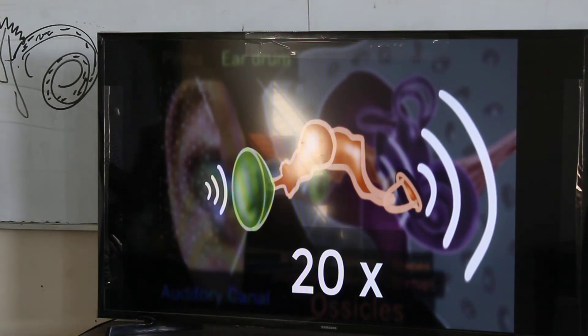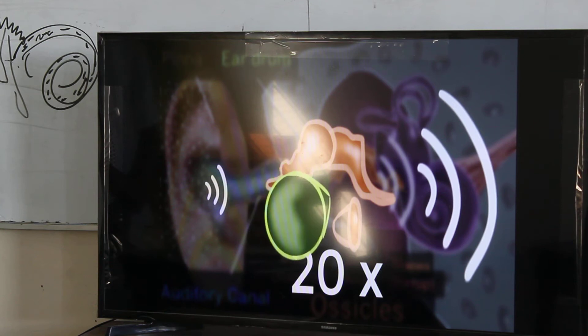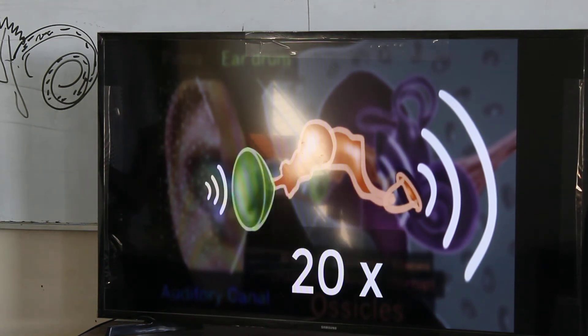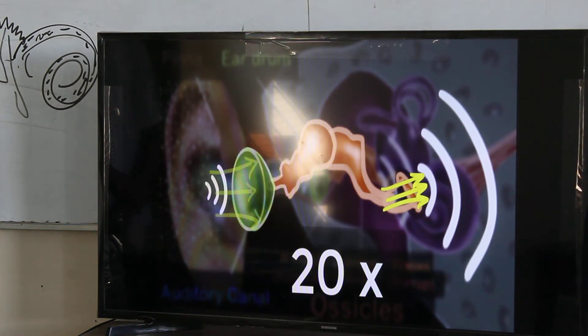But how do they do that? Well, just take a look at the base of the stapes. It has such a small area compared to that of the ear drum. So when the force gets transmitted from the ear drum to the stapes, it gets concentrated in a very tiny area. And you might know, when you concentrate force in a very tiny area, you increase its pressure.